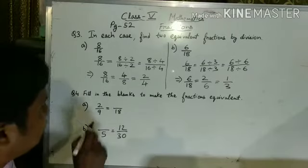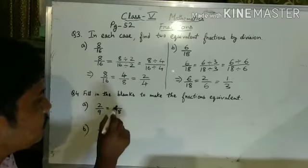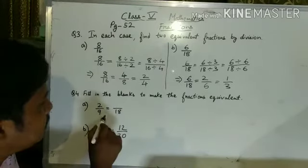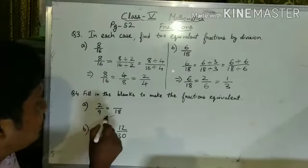You see, here this is numerator, this is denominator, this one numerator, this is denominator. In both the fractions, denominators are given. This is also denominator, this is also denominator.